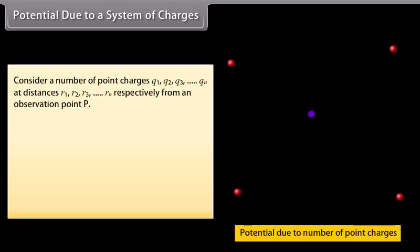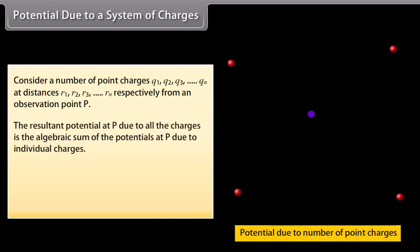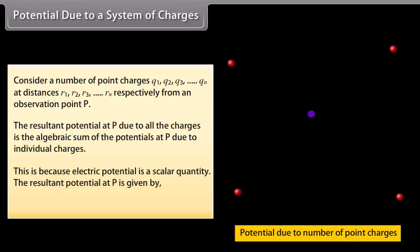Potential due to a system of charges. Consider point charges Q1, Q2, Q3, and so on up to Qn at distances R1, R2, R3, and so on up to Rn respectively from a point of observation P. The resultant potential at P due to all the charges is the algebraic sum of the potentials due to individual charges, because electric potential is a scalar quantity. The resultant potential is V equals V1 plus V2 plus V3 and so on up to Vn.